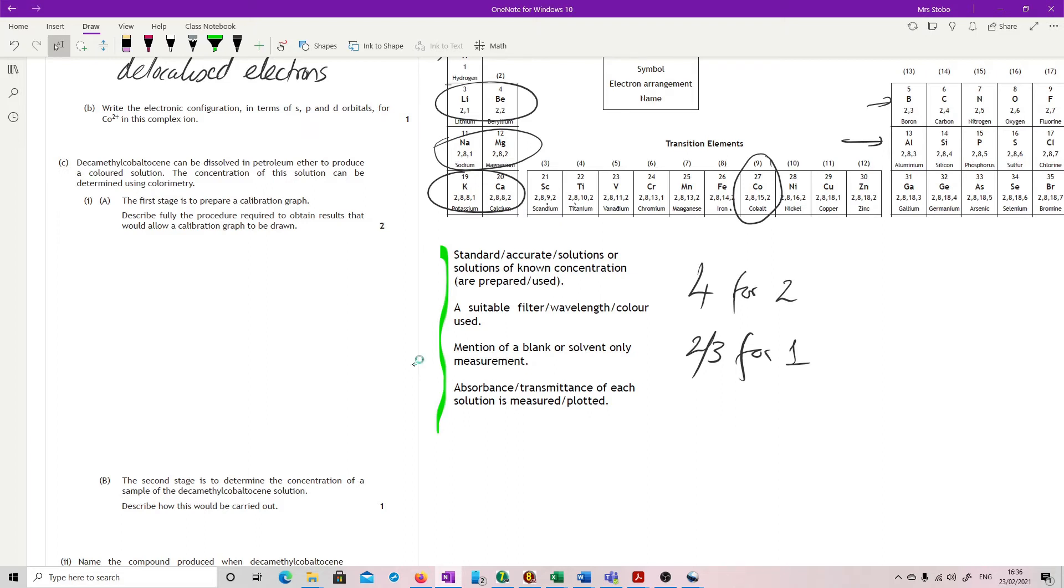So we need to start with standard or accurate solutions of very carefully known concentration, and you would do that by a preparation by dilution. You would then use the correct filter, and you would have to have a blank, so that's important. They're saying that you're going to have to use that as one that you're going back and forward, recalibrating to. And then finally, you plot it. So these are the 4 points, and if you've not got these 4, you've not got the 2 marks.